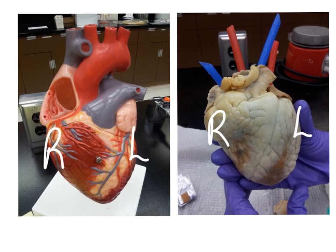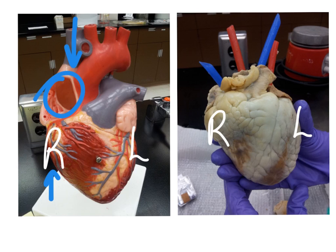Let's follow the path that deoxygenated blood is going to take returning from the body. It's going to be coming in the superior vena cava and the inferior — which we just can't see in this view — coming into the right atrium, going through the tricuspid valve.